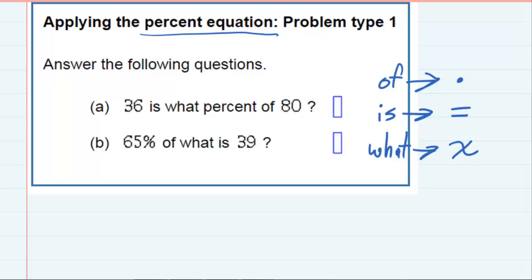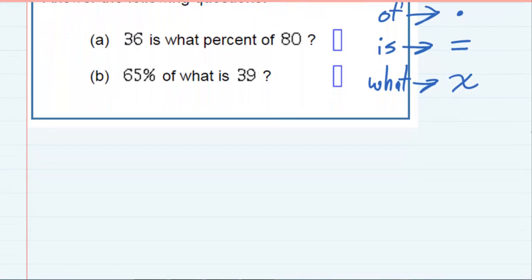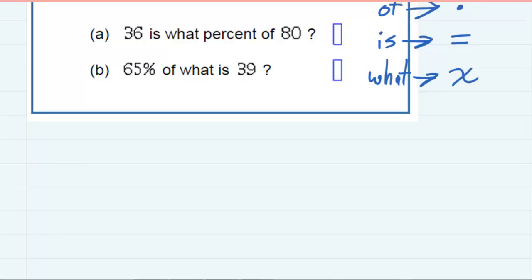And then we can take each one of these and do the translation to get an equation that we can then solve. So let's start with A. Starting with A, it says, 36 is what percent of 80?